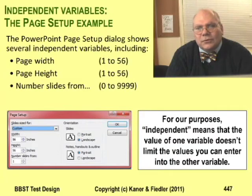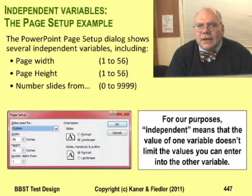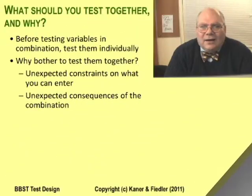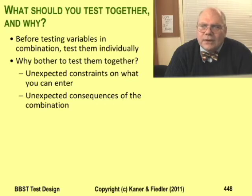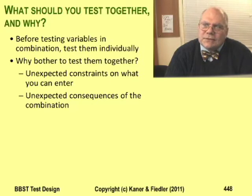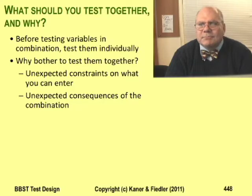So far we've looked at only one variable on this dialog — the page width variable. But there are others, and the program uses them together to control the display. I test simple failures on their own when I start testing a program, because I want to get past simple failures before running more complex, more expensive tests that are harder to troubleshoot. Also, when I focus testing on a single variable, I can look more closely at the program's error handling. But once I trust the program's basics, I want to test variables together because programs use variables together.